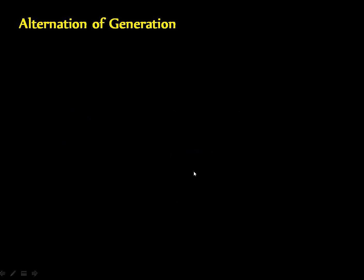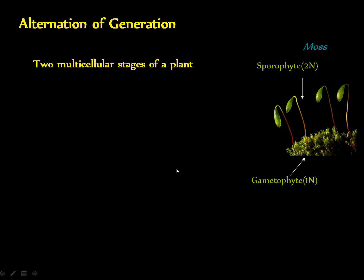Before we go further, I should mention some things about the gametophytes and sporophytes. The size of the gametophyte changes depending on the plant group. In moss, for example, the gametophyte is dominant — meaning it is larger, more visible, and lasts longer in the plant's life cycle than the sporophyte. The sporophyte is smaller and more dependent on the gametophyte for survival. However, in the case of vascular plants, the sporophyte is always dominant instead of the gametophyte.